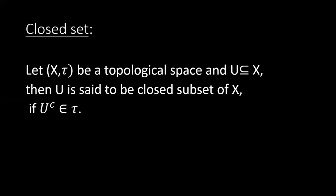Now let's move toward closed sets. Given a topological space (X, τ) and a subset U of X, U is called a closed subset of X if U complement belongs to τ. In other words, we take the complement of the members of τ, and if that complement belongs to τ, then the set is a closed set.